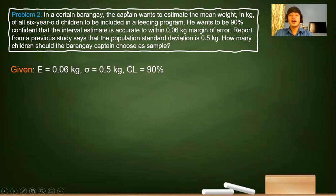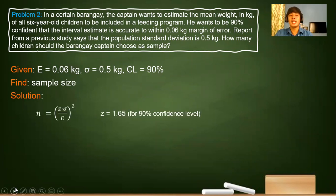Since our determination for the margin of error is the word within, the margin of error is 0.06. The population standard deviation σ is 0.5. The associated confidence level is 90%. For the solution, we use the formula: n is equal to (z × σ / E) squared, which is the margin of error squared. Do not forget to square.